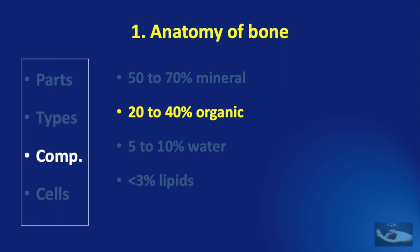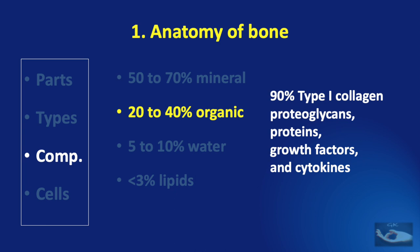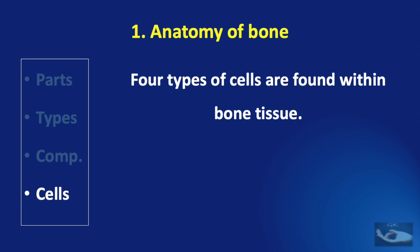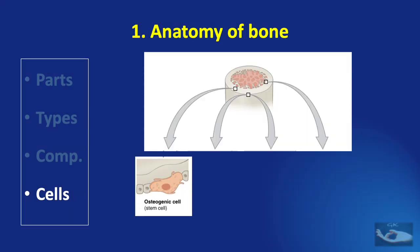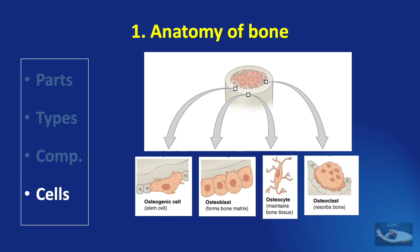Among the organic components of bone, type 1 collagen comprises 90%. Proteoglycans, proteins, growth factors, and cytokines comprise the other 10%. The most important part of the bone is its living tissue — the cells. Four types of cells are found within bone tissue: the osteogenic cell, the osteoblast, the osteocyte, and the osteoclast.